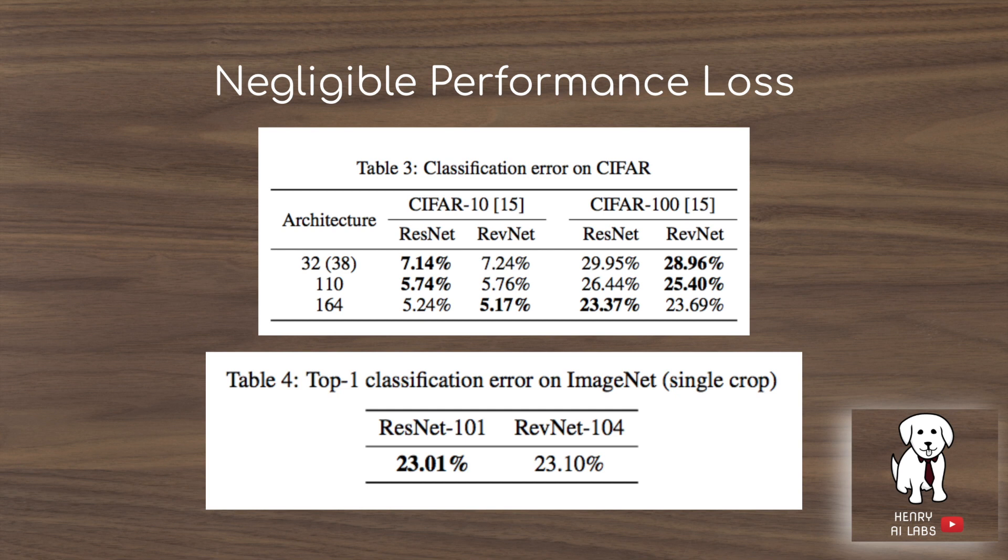This is the big impressive performance that they present: it's only slightly worse than the ResNet on CIFAR 10, CIFAR 100, and ImageNet, even when you restructure it in this way. The reason that it's slightly worse and not exactly the same is because there's some numerical error when you're approximating it in this way, but I didn't really completely get into the details of that.